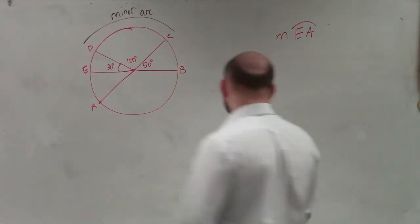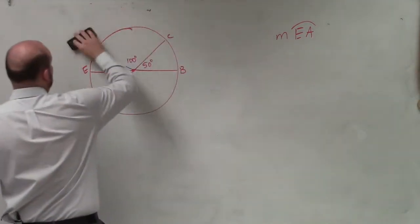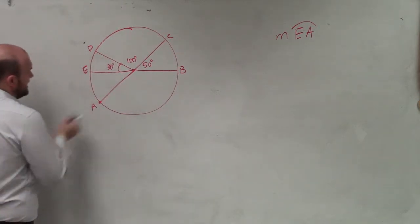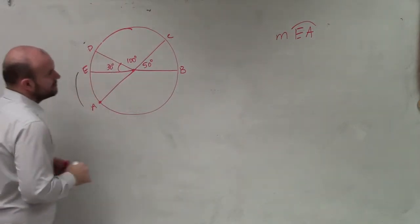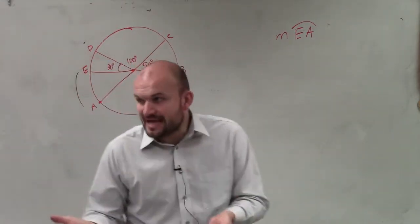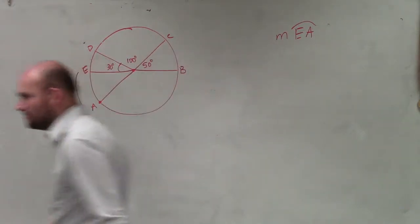Now the next one, this one gets a little bit more difficult because when we're looking at this, now we're looking at AE or EA, right? And we see that and we say, all right, so this one is less than 180.